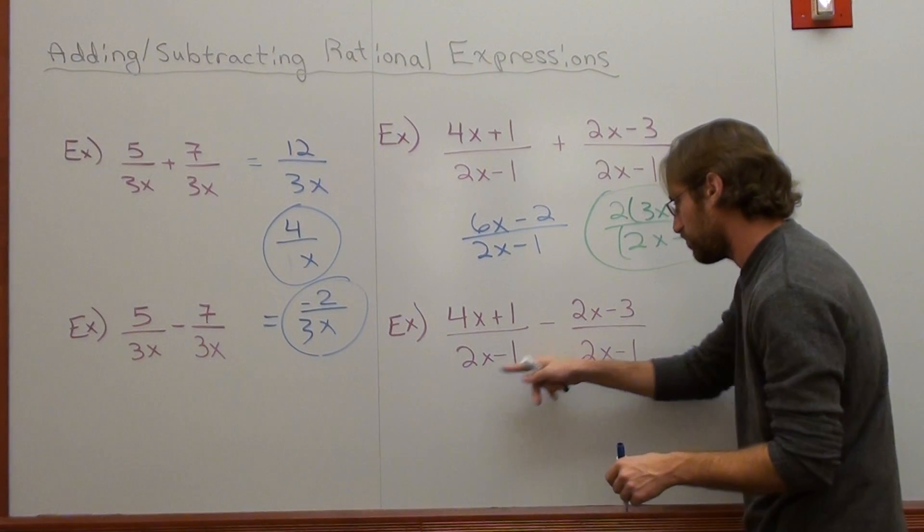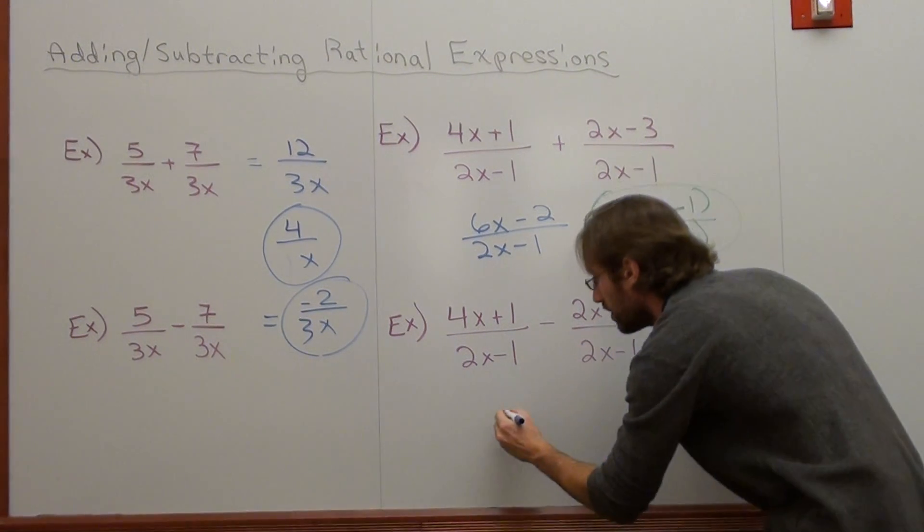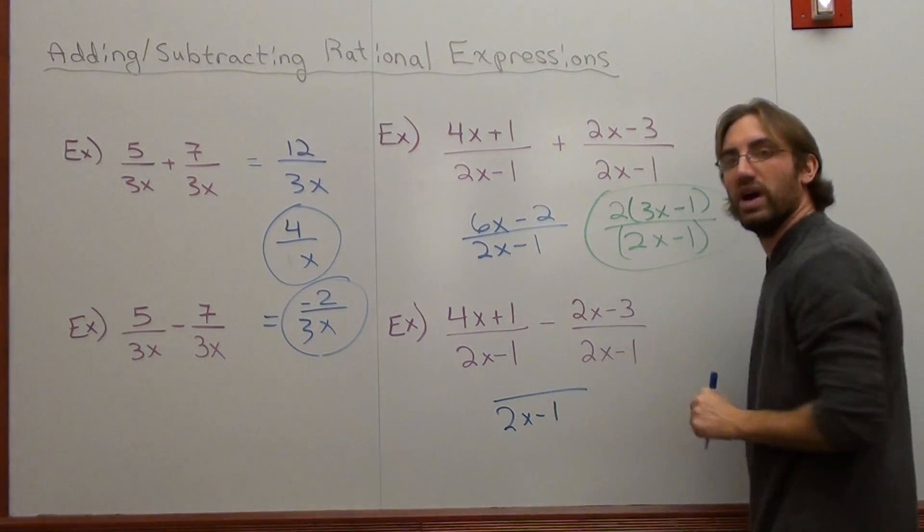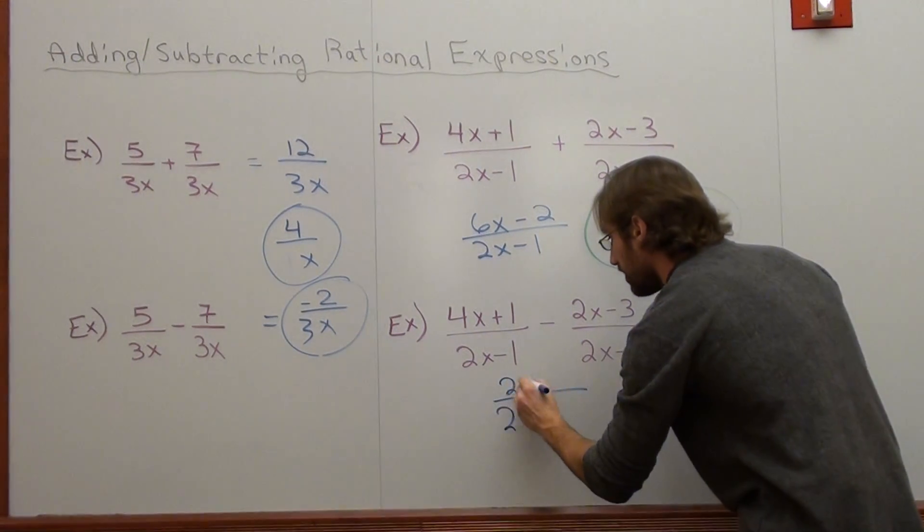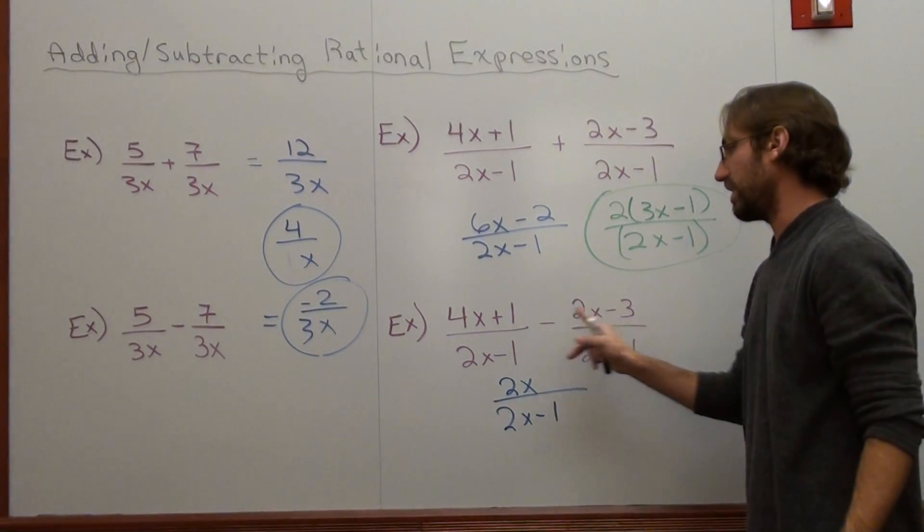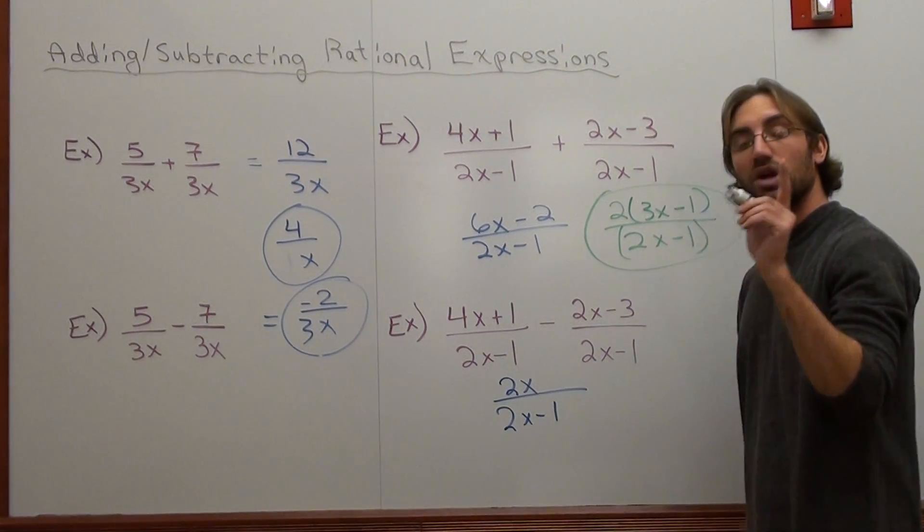Next one. I'm subtracting, but the denominators are the same. So it's 2x over 1. I've got 4x subtract 2x is 2x. Careful here. I've got 1 subtract negative 3. That's 1 plus 3, which is 4.